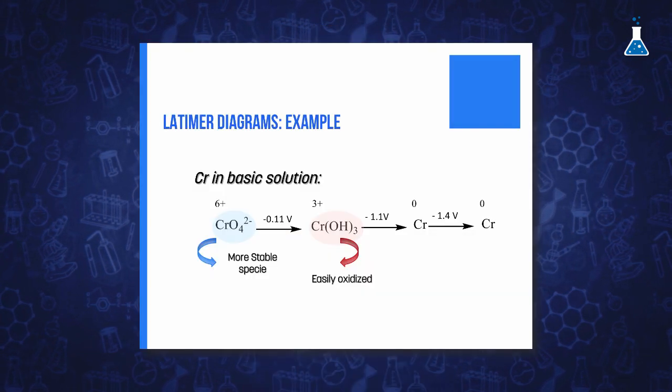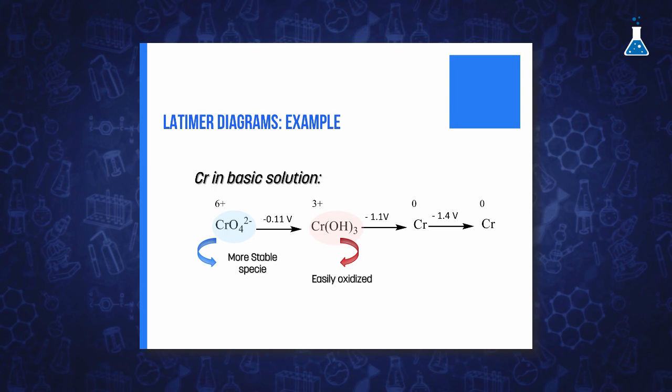Chromium in oxidation states 2 and 3 is present as hydroxides which are easily oxidized to the 6+ state.